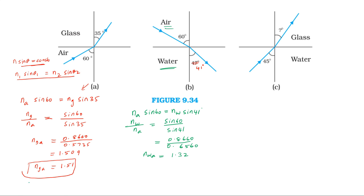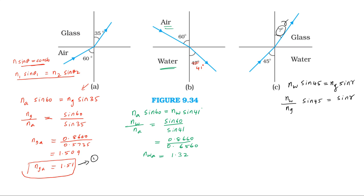Now for the third case — water to glass interface. Applying Snell's Law: refractive index of water into sin 45 equals refractive index of glass into sin r. Rearranging, refractive index of water divided by refractive index of glass into sin 45 equals sin r. Using equations 1 and 2, the refractive index of glass with respect to water equals refractive index of glass by refractive index of air.